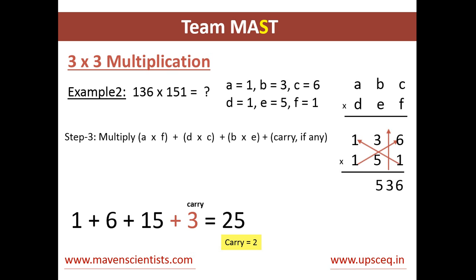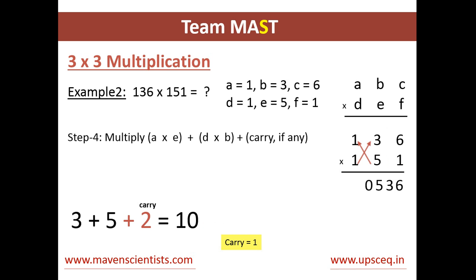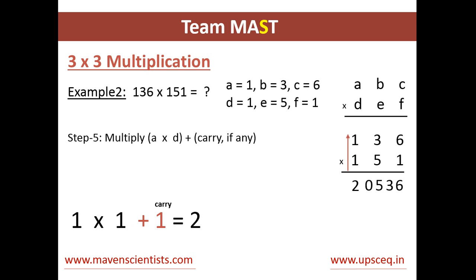In the next step we multiply 5 into 1 plus 1 into 3, which gives 5 plus 3 plus carry 2 from the previous step, equals 10. We carry 1 and write 0 next to 536 in the answer. Finally, we multiply 1 into 1 plus carry 1 and get 2. So 2, 0, 5, 3, 6 is the answer.